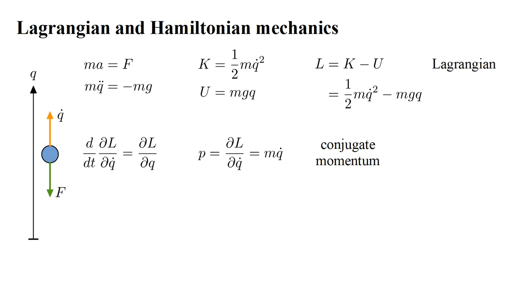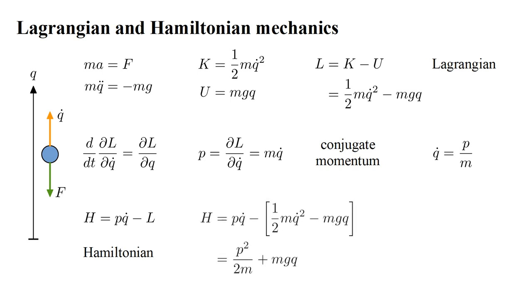In Hamiltonian mechanics, we denote by P the derivative of the Lagrangian with respect to velocity, and call this the conjugate momentum. For our example problem, this is simply M Q dot, the mechanical momentum of the particle. We solve for Q dot equals P over M, and form the Hamiltonian, H equals P Q dot minus the Lagrangian. We substitute for Q dot in terms of P to arrive at an expression for H in terms of P and Q: P squared over two M plus M G Q. This is the kinetic energy plus the potential energy, which is the total energy.